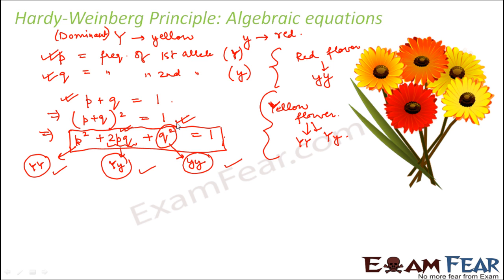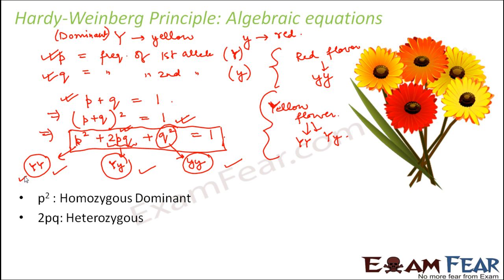We will also solve a few problems in order to make sure that you got it right. So p squared tells you the frequency of homozygous dominant, which is capital Y capital Y; 2pq will tell you about the heterozygous frequency; and q squared will tell you about the homozygous recessive.